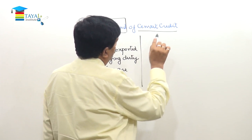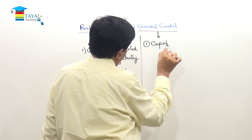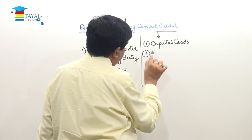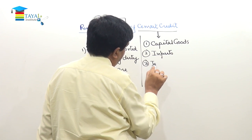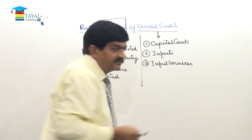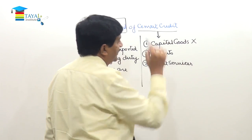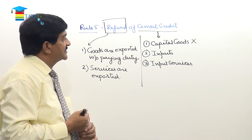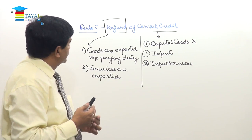Now, refund of CENVAT credit — we know that CENVAT credit is available in respect of capital goods, in respect of inputs, and in respect of input services. But as per rule number five, CENVAT credit in respect of capital goods is never refundable in cash. This rule applies whether it is rule five or any other rule.